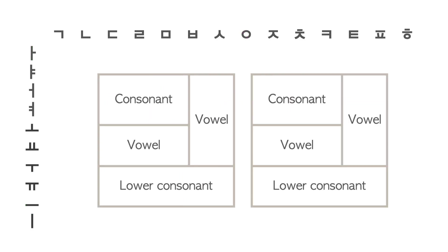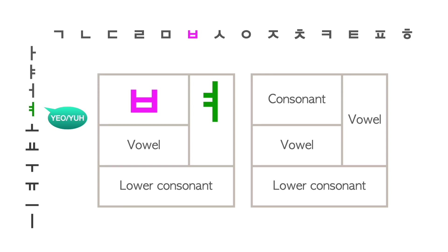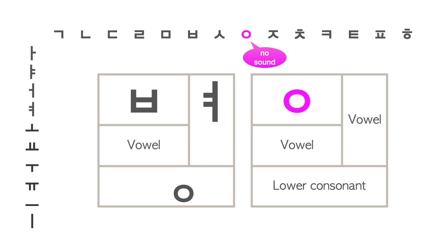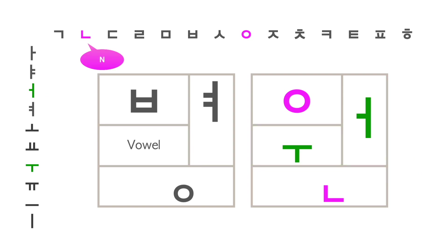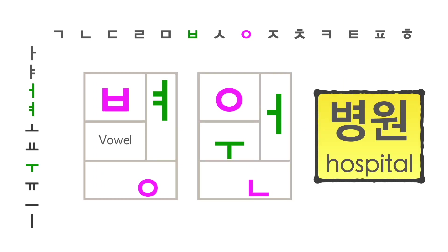This time, let's try to form the word 병원. To make the letter 병, we need the consonant 비읍, the vowel 여, and a lower consonant 이응 for the NG sound. For the second letter 원, we start with the consonant 이응 — which has no sound here — and use the first vowel 우 and second vowel 어 together to make the compound sound 워. Last, we add the consonant 니은 as a lower consonant to form 원. Together, 병원 means hospital.